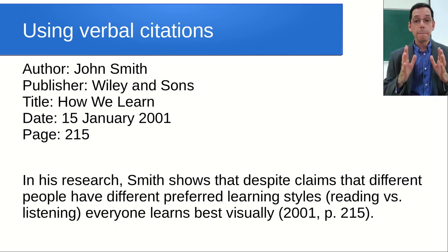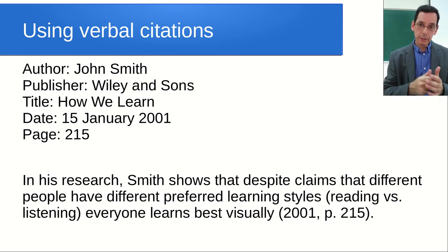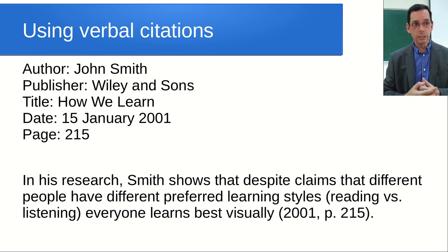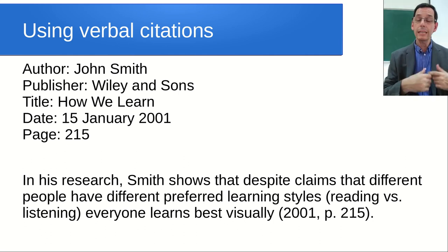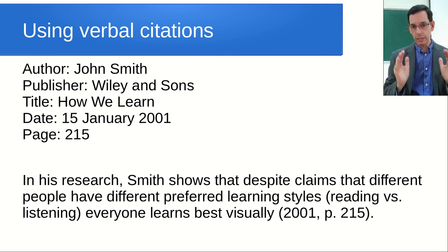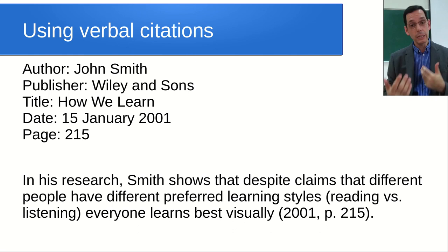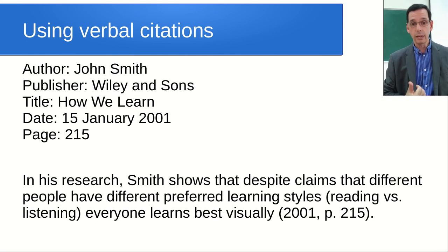There is another type of citation called a verbal citation, where we don't put the author's name in parentheses. For example: 'In his research, Smith shows that despite claims that different people have different preferred learning styles - reading versus listening - everyone learns best visually.' Here we don't put Smith in parentheses because we've already given him credit in the text. When reading aloud, we normally never read what's in parentheses. But in this case, his name is in the text and we do read it aloud, so we don't need to put it in parentheses. Anyone marking your paper will understand clearly that this is from Smith.